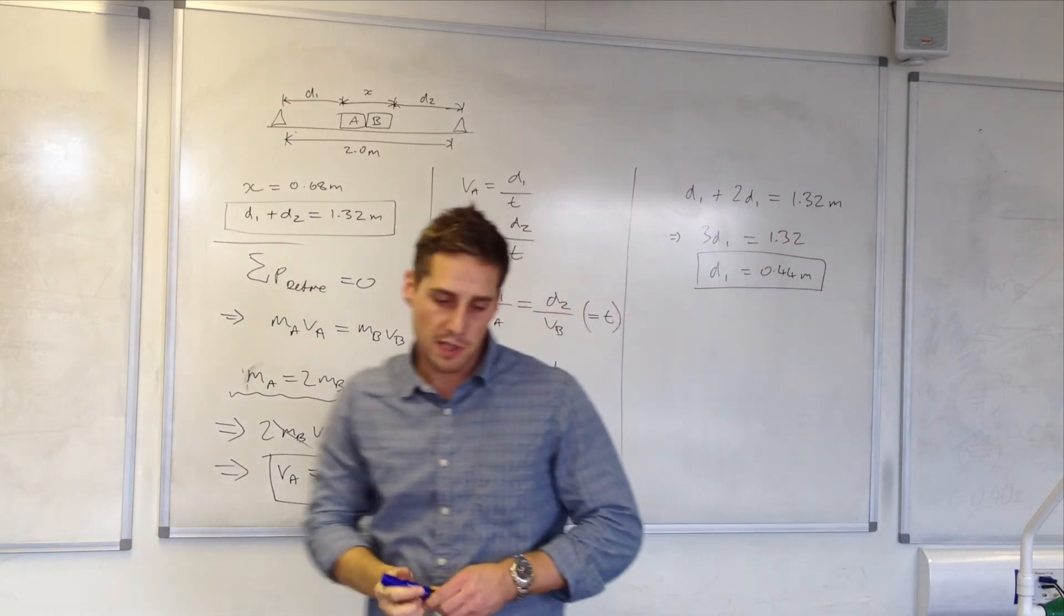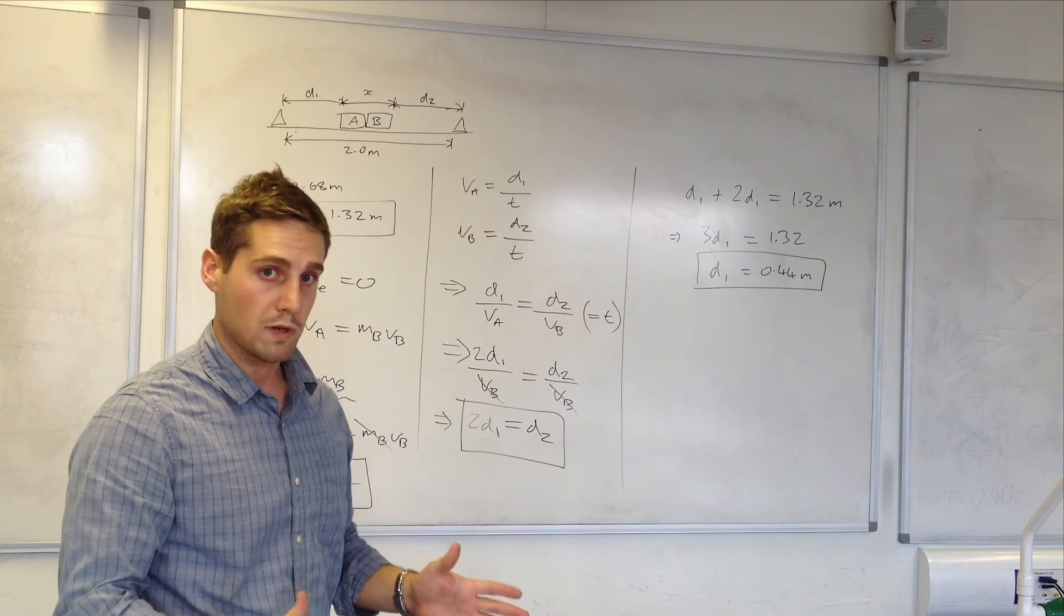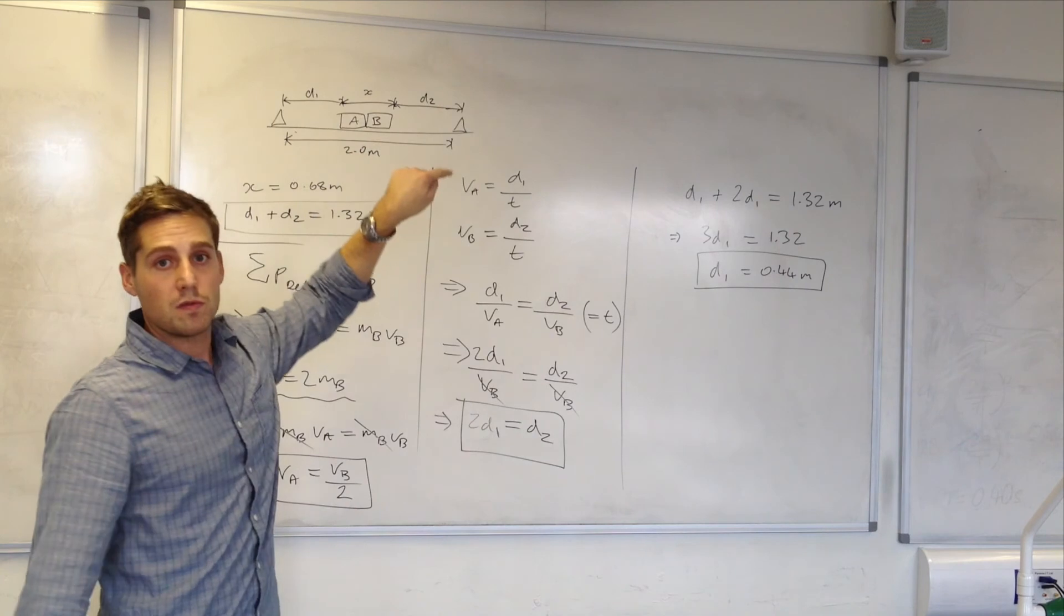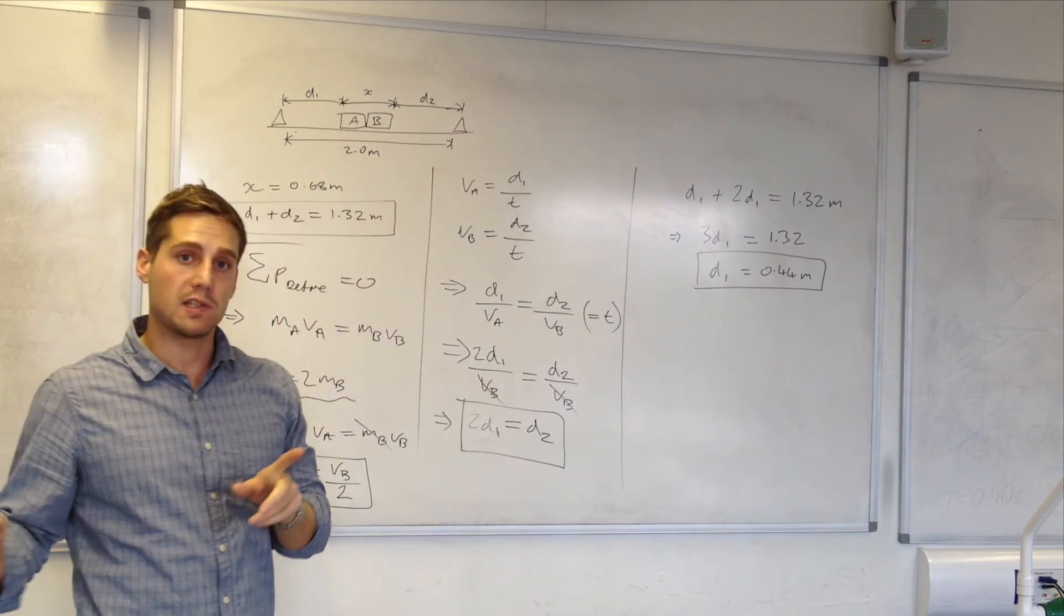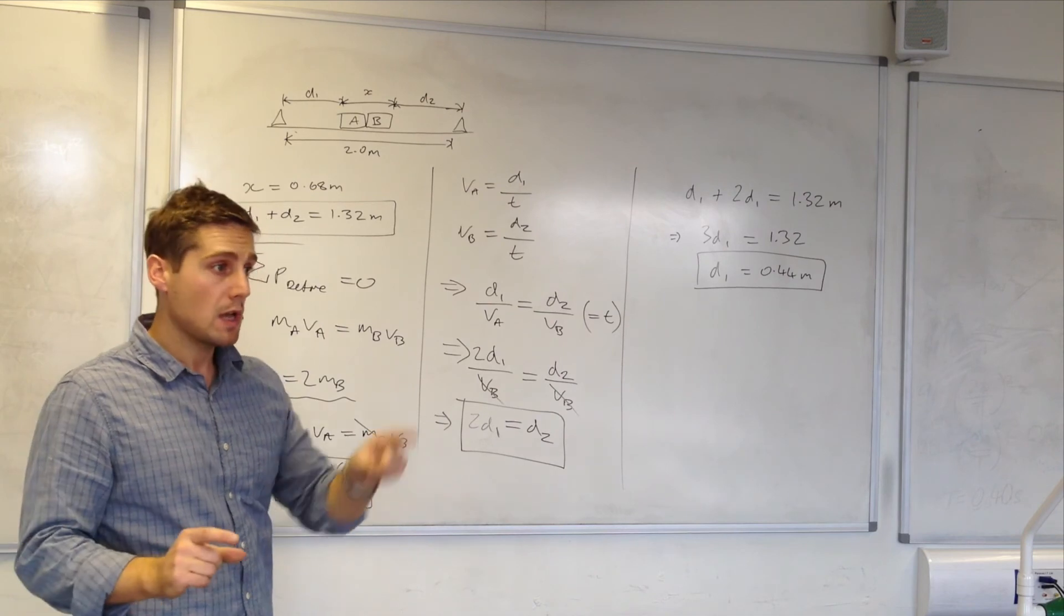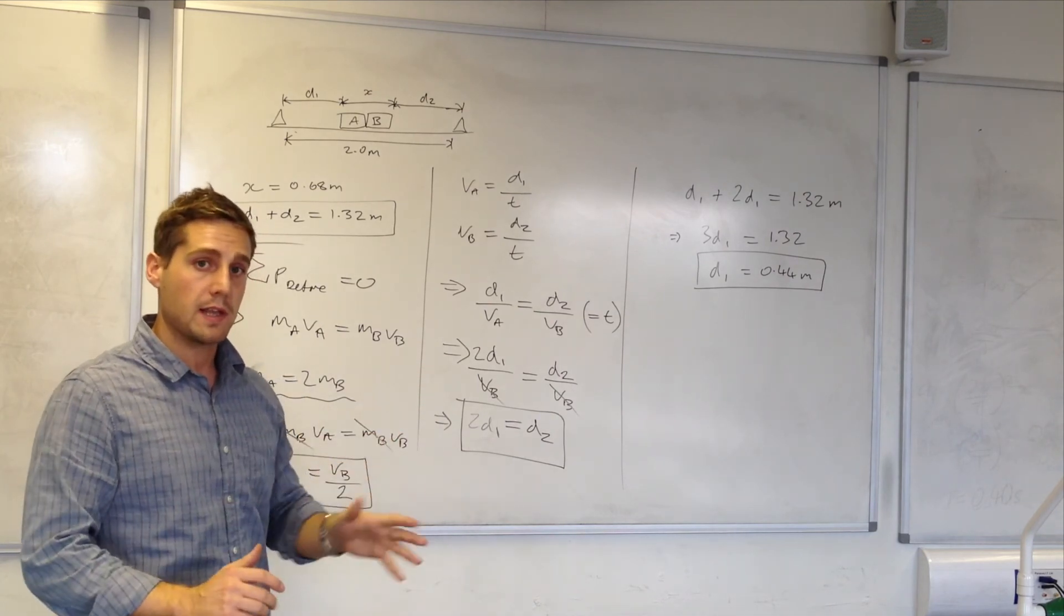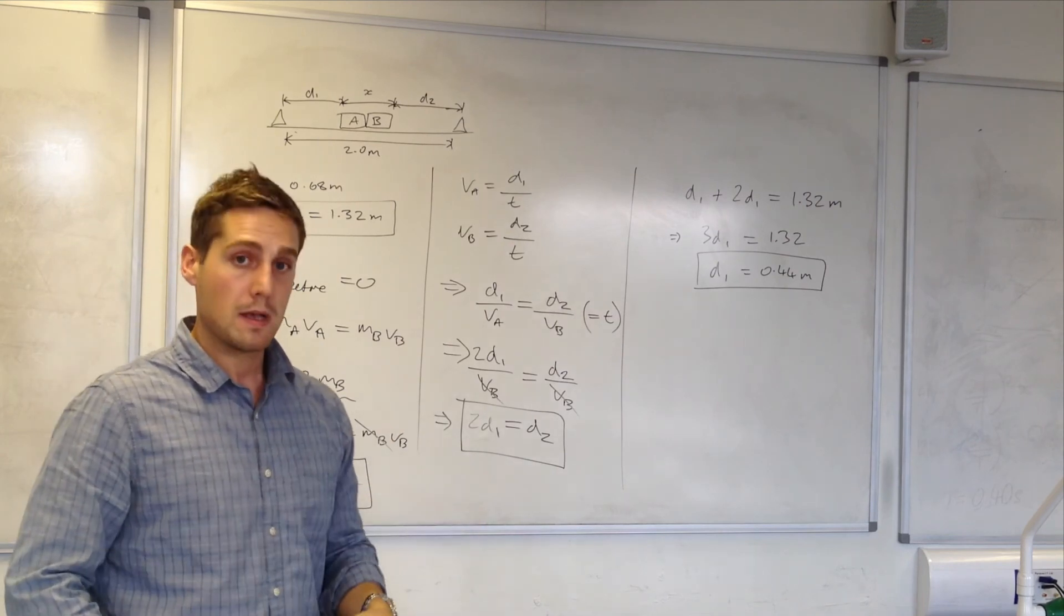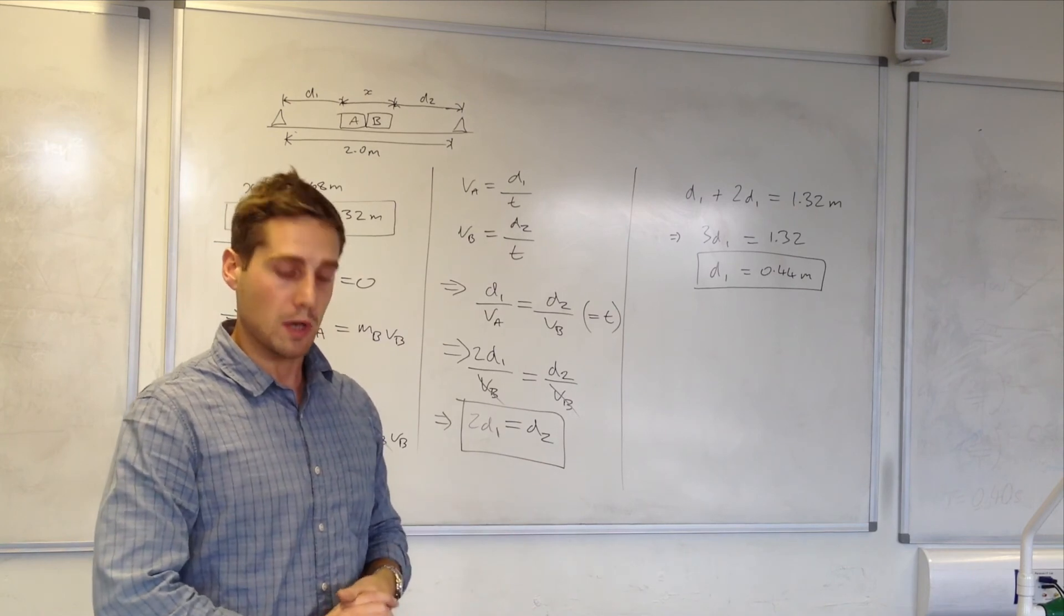I only need to work out D1 because I just need to worry about positioning one of the trolleys. D1 correlates with trolley A so the double mass trolley needs to be 44 centimeters away from the end of the stop and if I position it there and hit the plunger they should hit the stops at the same time. So I will now go back to the experiment and see if it works.